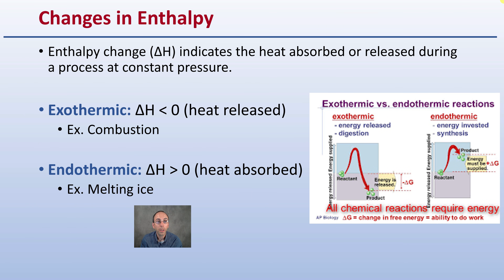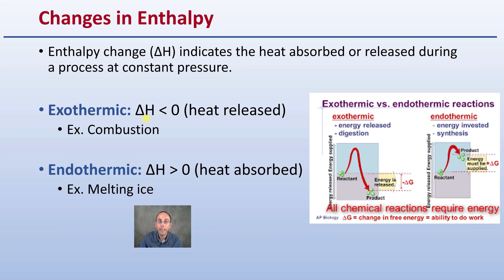When looking at changes in enthalpy, delta H means change in enthalpy and indicates the heat absorbed or released during a process at constant pressure. There are two scenarios: exothermic and endothermic. Exothermic means heat is released, as in combustion — when that occurs, delta H is less than zero, meaning it's negative. Endothermic is where heat is being absorbed, and that's where delta H is a positive number.